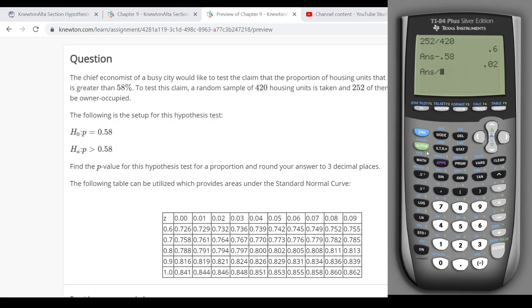And then dividing this by the standard deviation or the standard error for the distribution of proportions, which is that square root of p, so 0.58, times 1 minus p, which would be 0.42, divided by n, divided by the sample size, which was 420 housing units. And again, make sure all these numbers are underneath that square root in the denominator there.